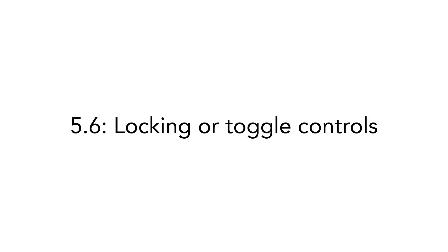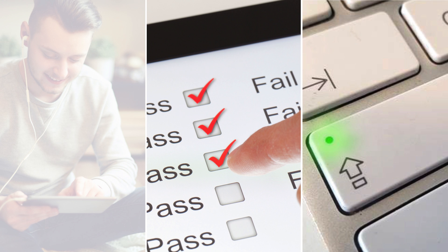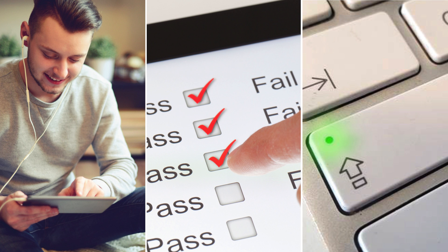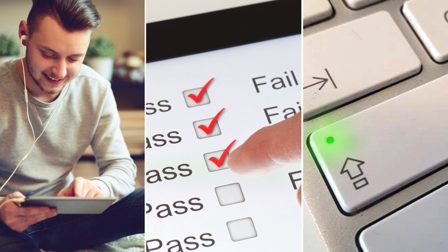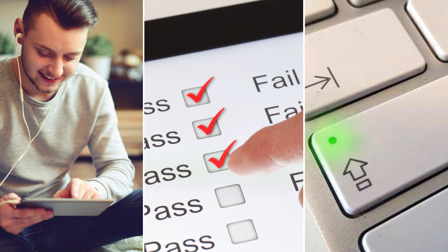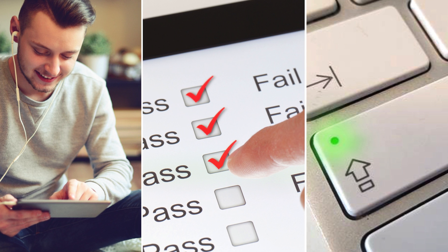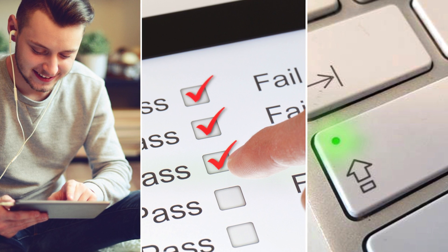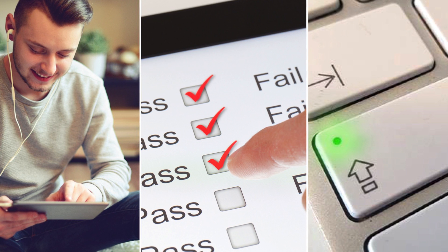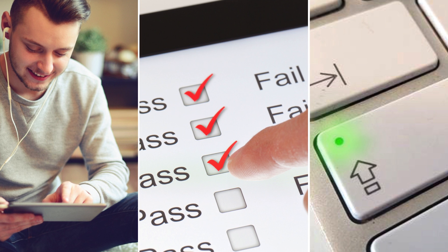5.6 has to do with locking or toggle controls. When a product or system has controls like checkboxes or buttons that can have different statuses — for example checked or unchecked, active or deactivated — the status must be possible for the user to understand without affecting the status as such. For example, it must be possible to understand if a caps lock key is pressed or not without pressing it. There are two requirements in this subsection. There must be tactile or auditory information for visual controls — for example, if the status of the checkbox is visual, the user must have the possibility to hear or feel the status. It must also be possible to see the status even if it normally is non-visual — for example, if the status of the checkbox is presented by sound, it must also be possible to see.